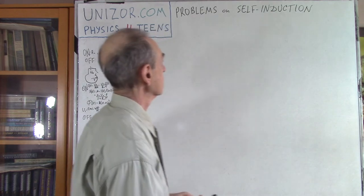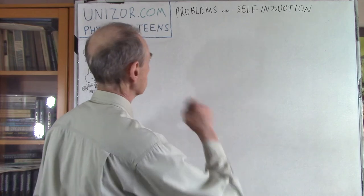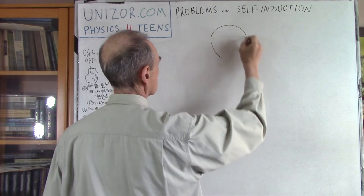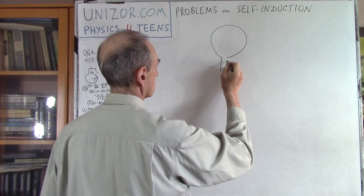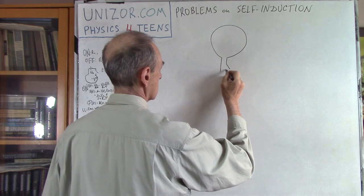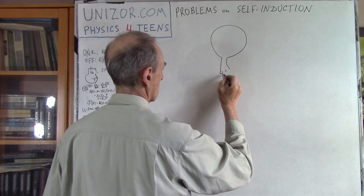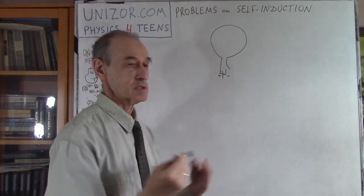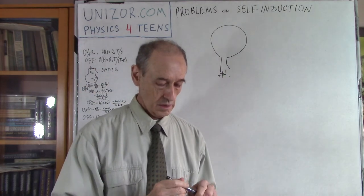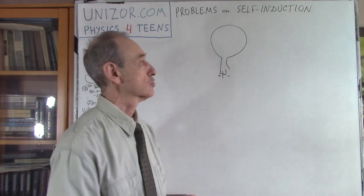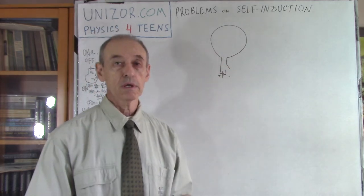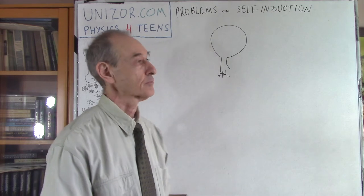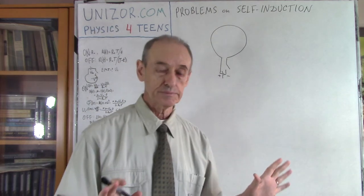So here is the problem. The setting is the following: you have a wire loop connected to a switch and a battery — plus, minus. The switch is an on/off switch. Our purpose is to basically calculate what happens with self-induction in this case, and then the second problem will be about the current.